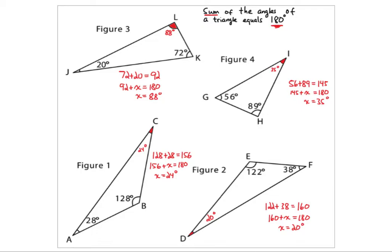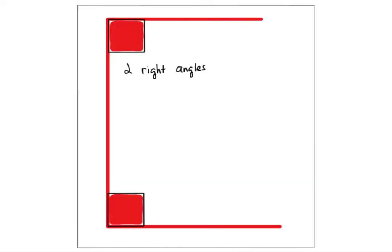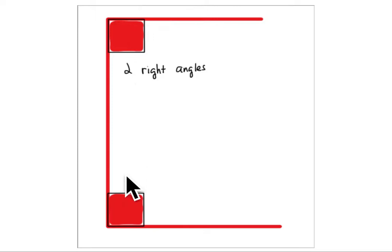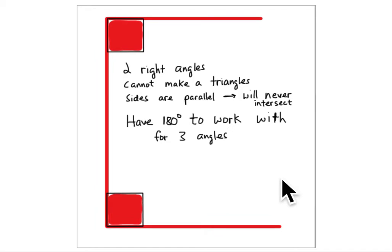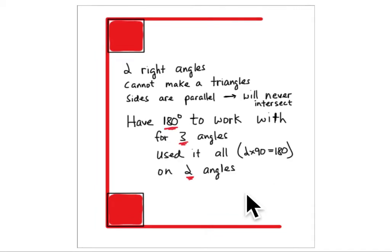The next problem asks: is there a triangle with two right angles? The answer is no. If you have two right angles, that uses all 180 degrees — you've used up every degree available, leaving nothing for a third angle. Those two sides would form parallel lines that go on forever and never cross, so you would never get a triangle. Two right angles cannot make a triangle.